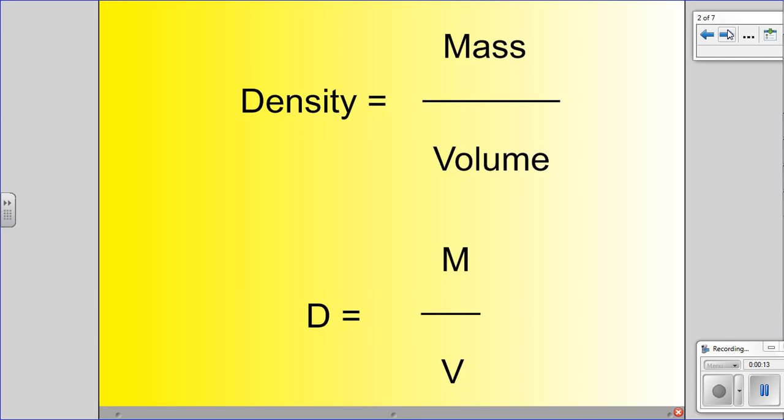We learned the formula for density was mass divided by volume. This line right here represents divided by, it's like a fraction, divided by volume. D equals M over V. That may also be a way they're going to see this formula written. It just means density equals mass divided by volume.